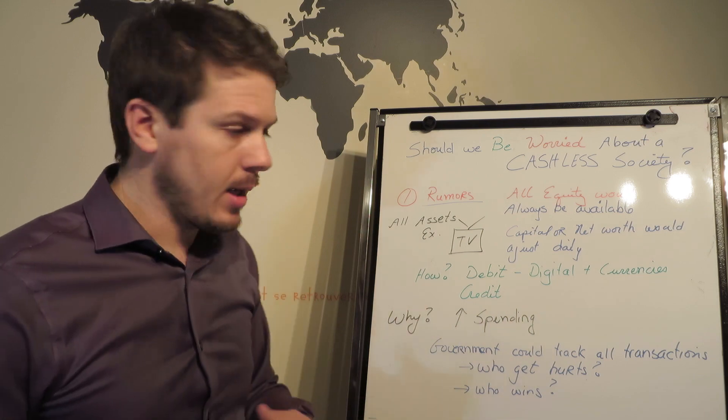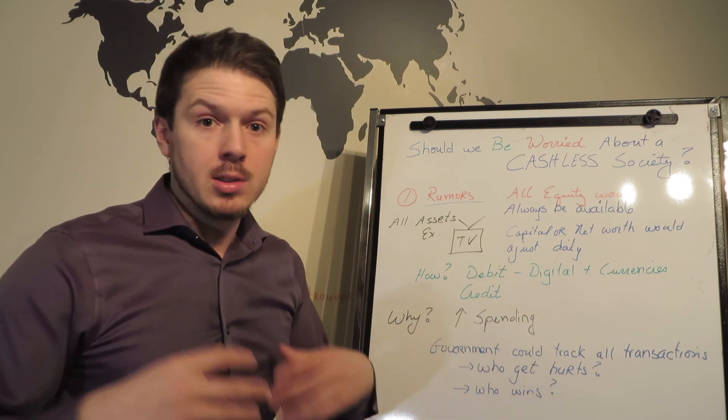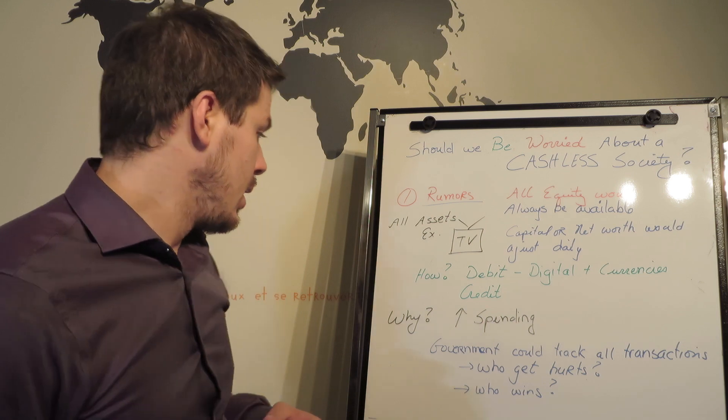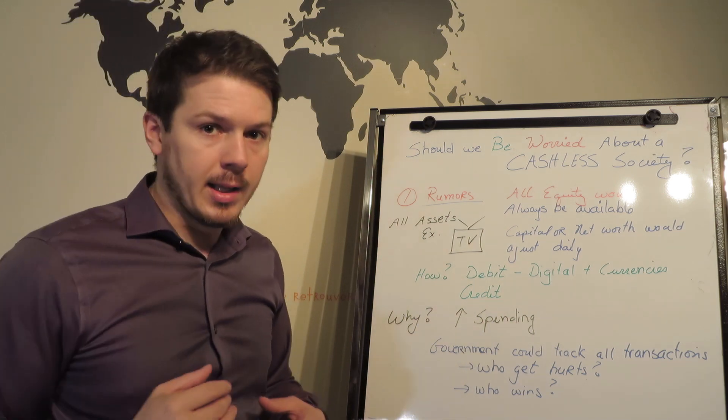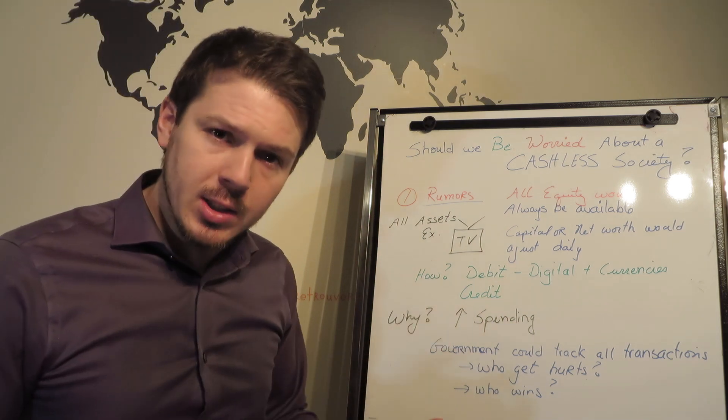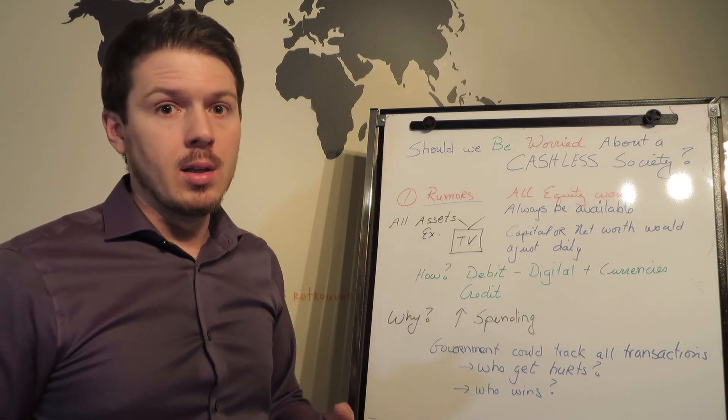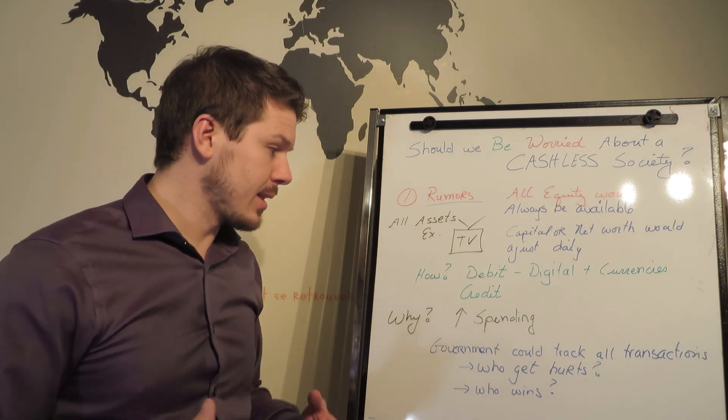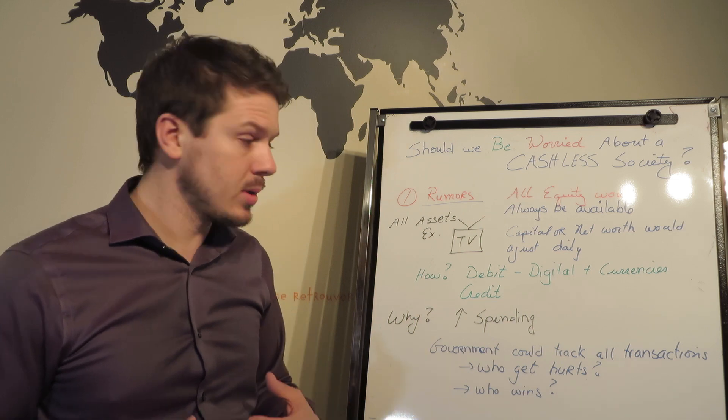Governments could track all transactions. There'll be less hidden parts of the economy and everything would be on a digital screen. Who gets hurt? Of course, the lower and middle class. It's kind of sad because they're the ones who need it the most.